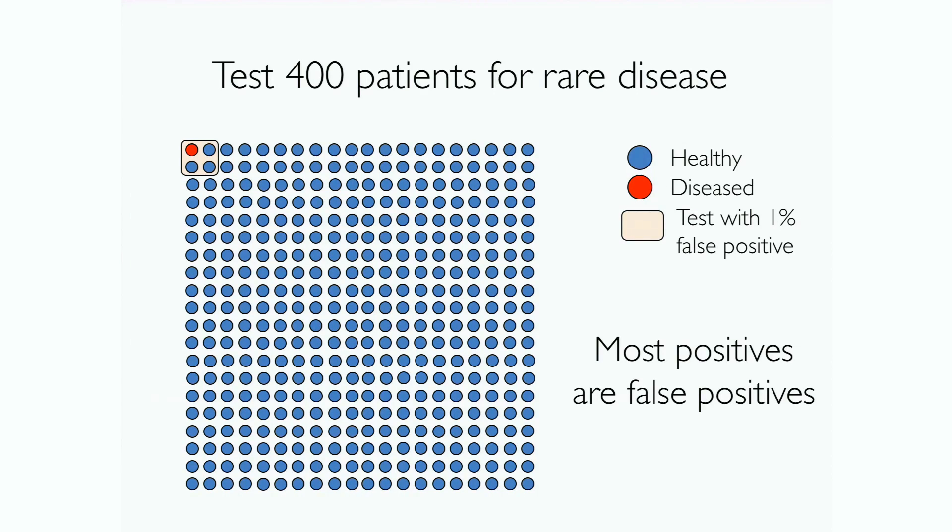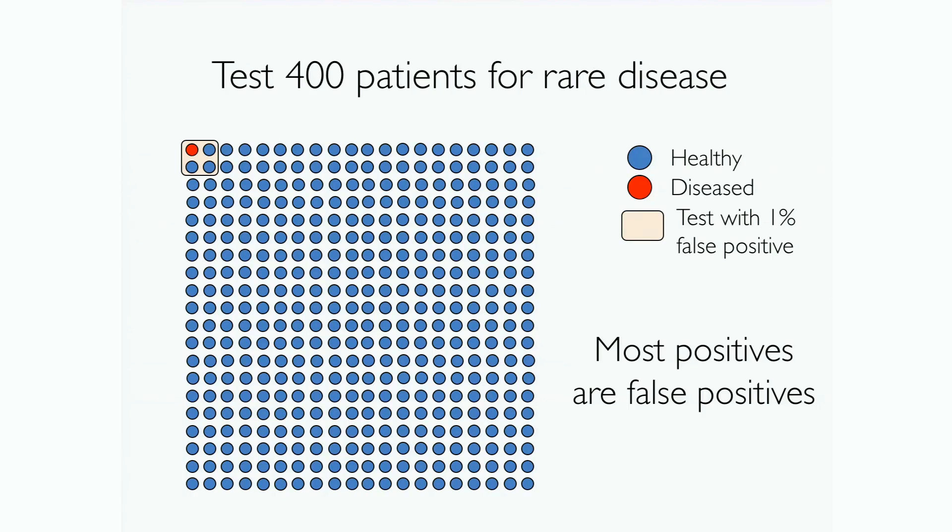Well, three of them are going to be false positives, and one is going to be a true positive. And so Ioannidis says, well, the same thing is going on in science. If we test 400 unlikely hypotheses, and here now let's test them with a 5% false positive rate, then what are we going to get? Well, we're going to get a bunch of positives.